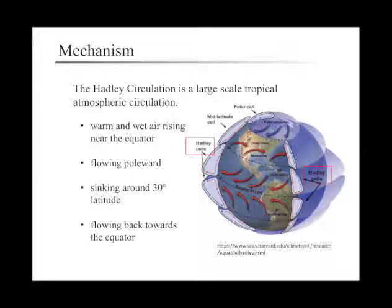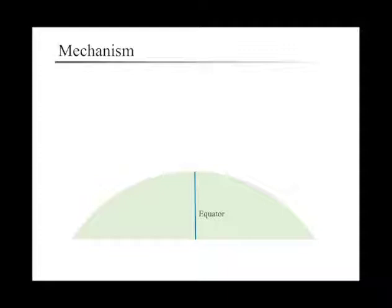The warm moist air rises at or near the equator, flowing poleward at 10 to 15 kilometers above the surface, descending in the subtropics, which is usually around 30 degrees latitude, and then returning equatorward near the surface.